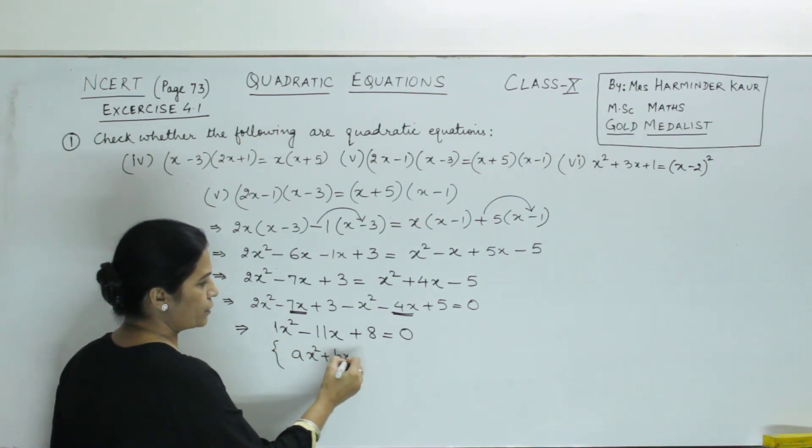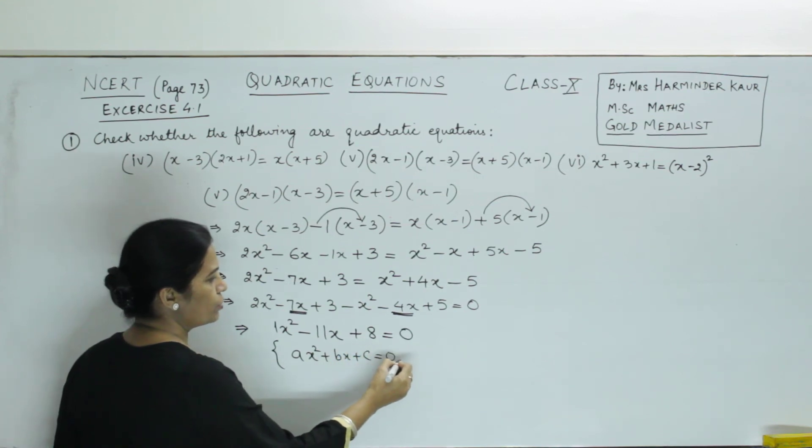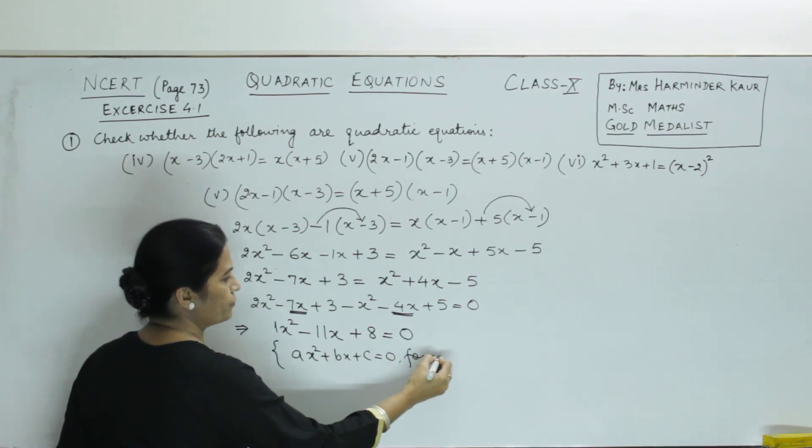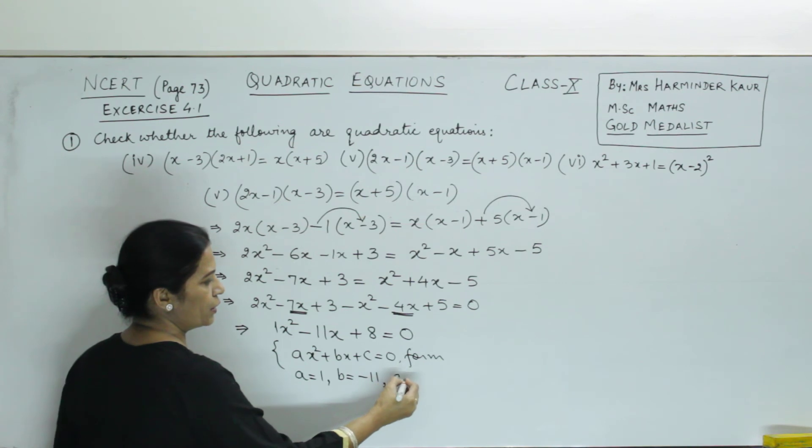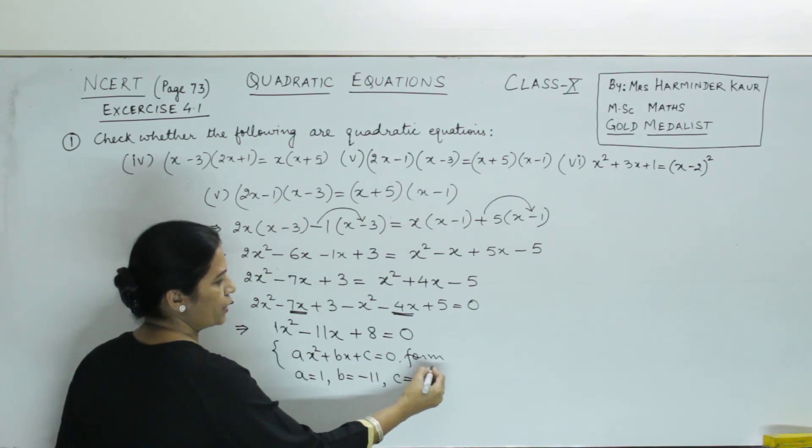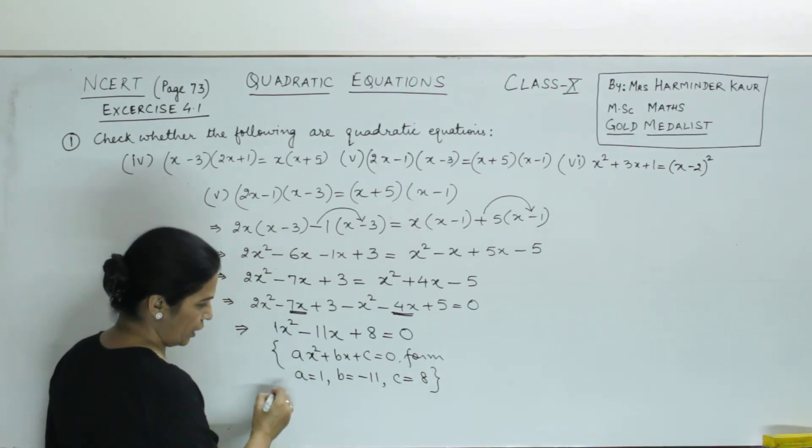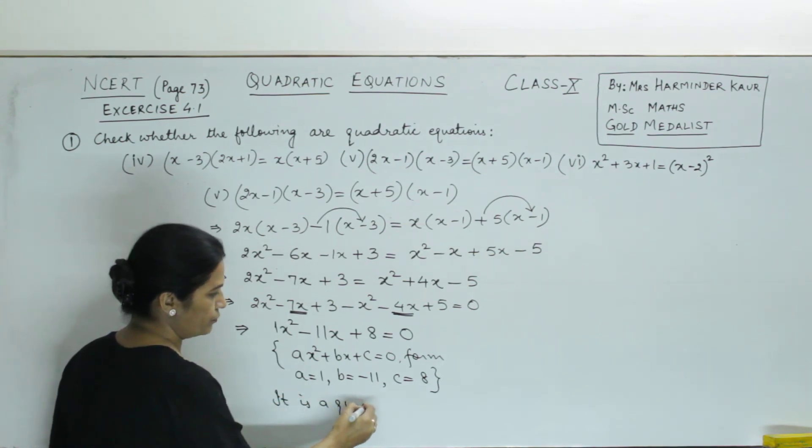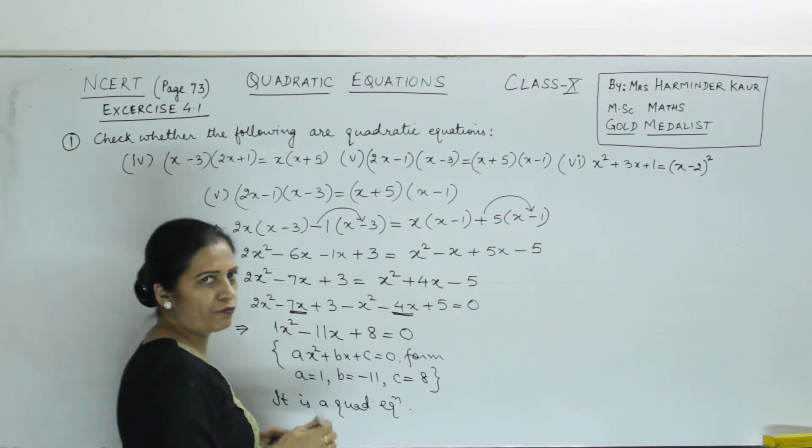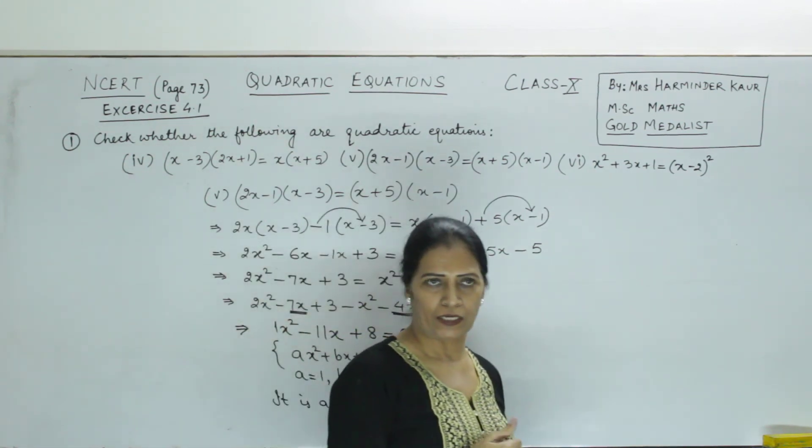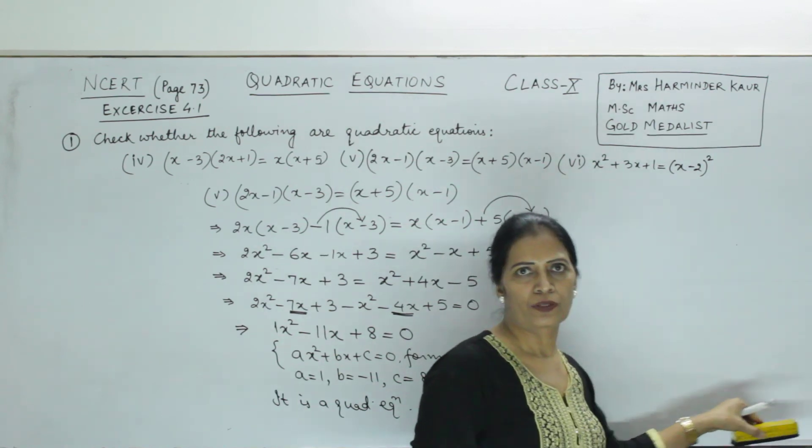You can see it is of the form ax² + bx + c = 0. Here a is 1, b is minus 11, coefficient of x. c is 8, constant. So, we say it is a quadratic equation. Why quadratic equation? Because highest power of x, variable ki highest power is 2.